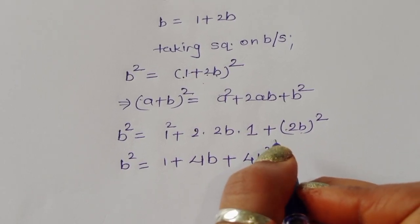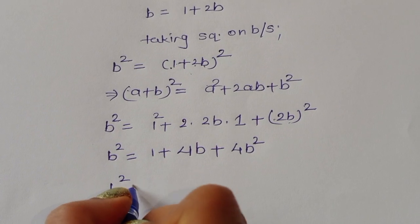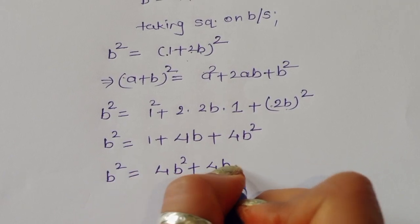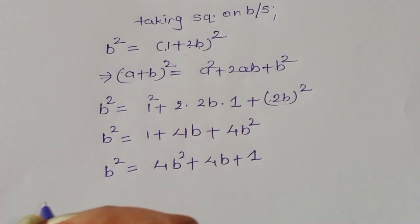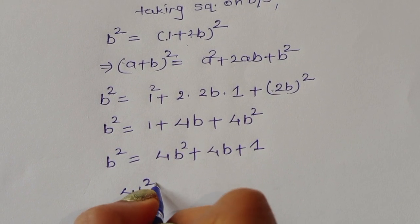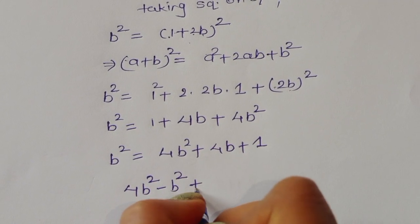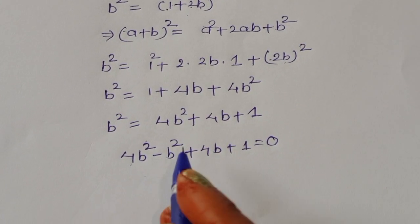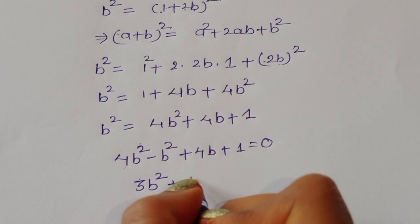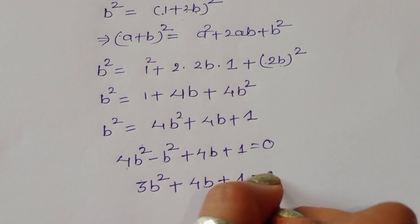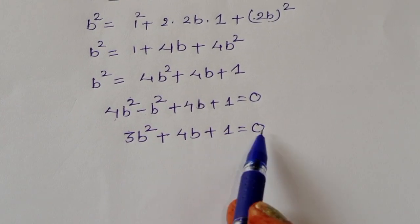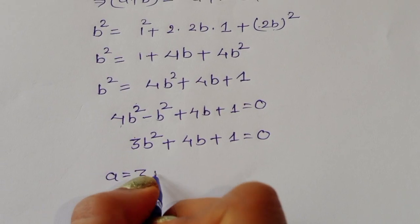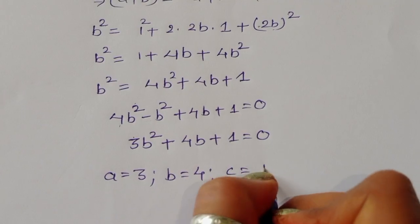So we can write b² = 4b² + 4b + 1. Rearranging into equation form: 4b² − b² + 4b + 1 = 0, giving 3b² + 4b + 1 = 0. Taking the coefficients: a = 3, b = 4, and c = 1.